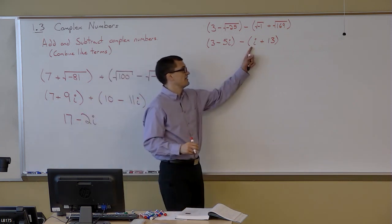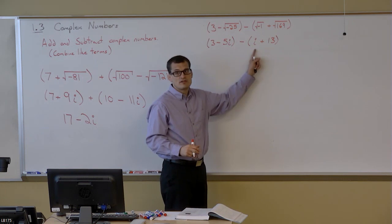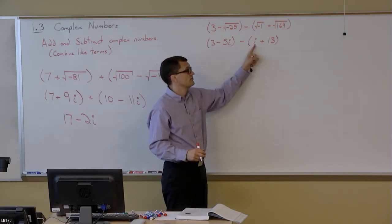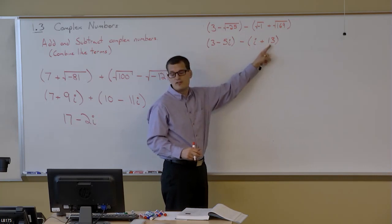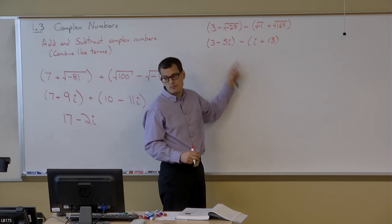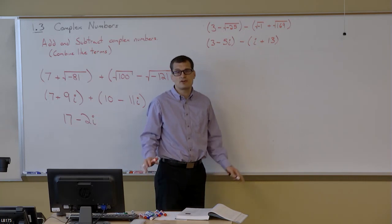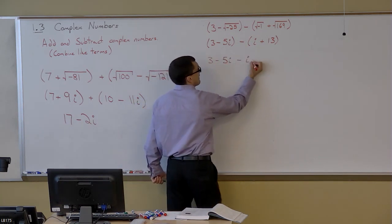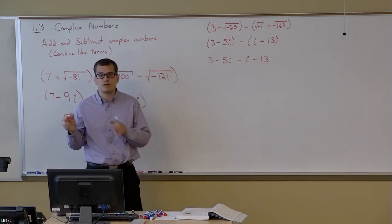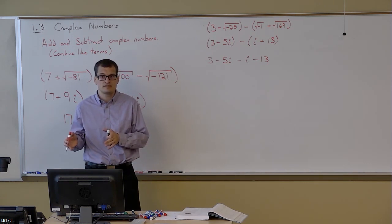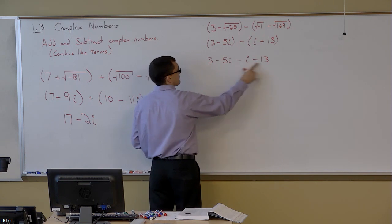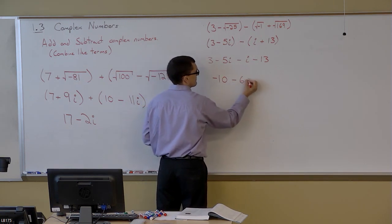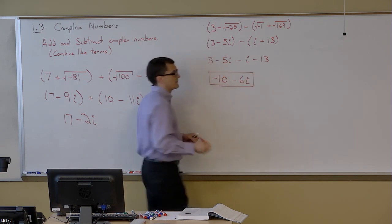I hope it doesn't bother you that the i, the imaginary part, and the real part aren't in the same order that we usually write them. It's fine to have the imaginary part in front and the real part behind. It's fine to have the real part in front and the imaginary part behind when you write things. As we do this, a lot of times just as habit, I tend to write my answer as the real part in front and then the imaginary part behind. So when I combine my like terms, I'll probably combine the real parts first to give me -10, and then I'll combine the imaginary parts to give me -6i. And that is my final answer.